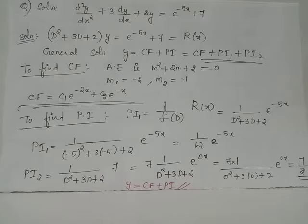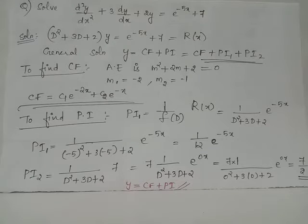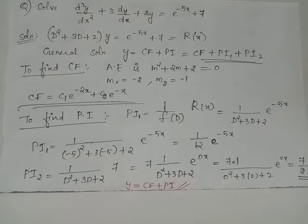Solve the differential equation d²y/dx² + 3(dy/dx) + 2y = e^(-5x) + 7. Here RHS = R(x) = e^(-5x) + 7, which is a non-zero quantity, and hence we have a non-homogeneous type of differential equation whose general solution will be CF + PI.